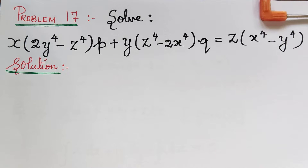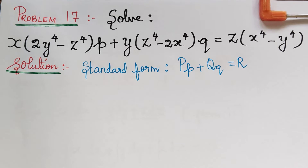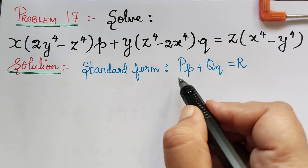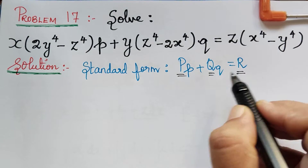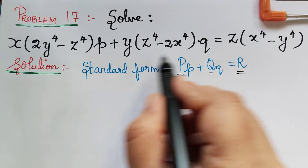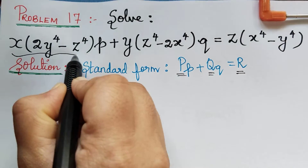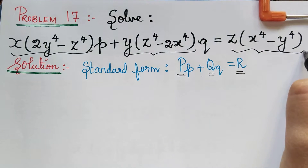Under Lagrange's partial differential equation, here we have problem 17. As the first step, let us write the standard form of Lagrange's partial differential equation. After comparing with the standard form, we have to write the value of capital P, capital Q, and capital R. While comparing with the given equation, we get the value of capital P, capital Q, and capital R.